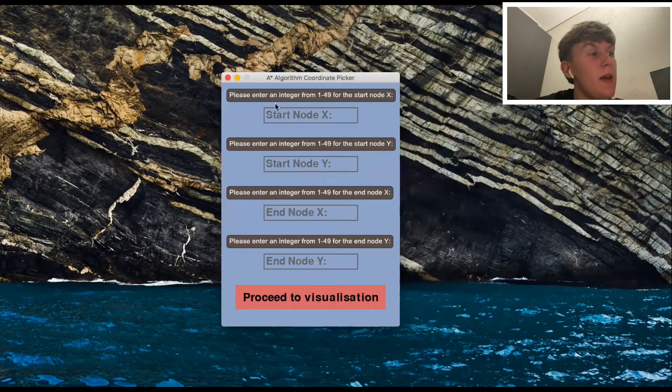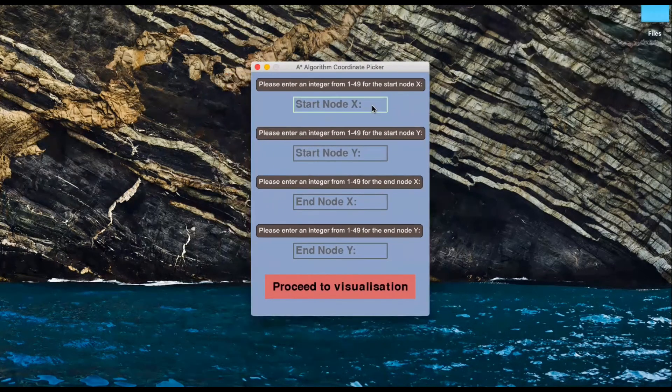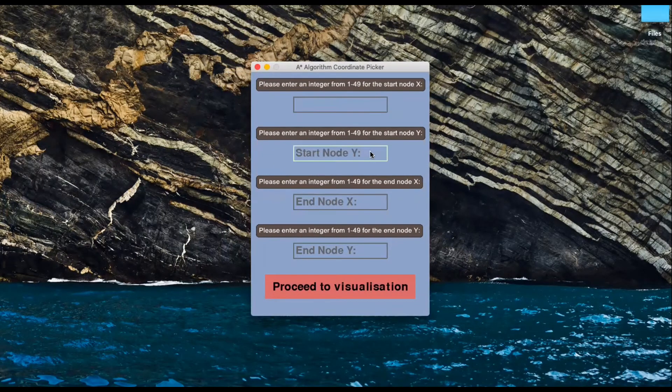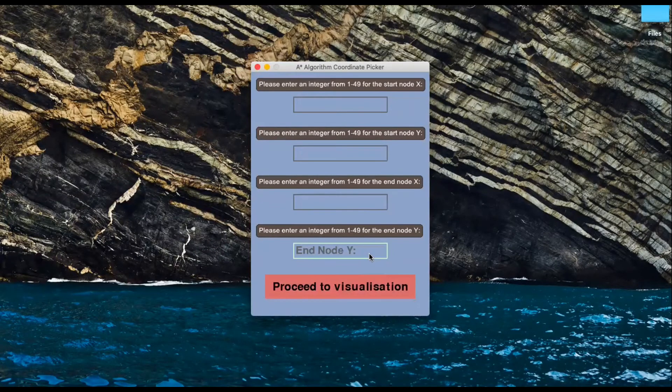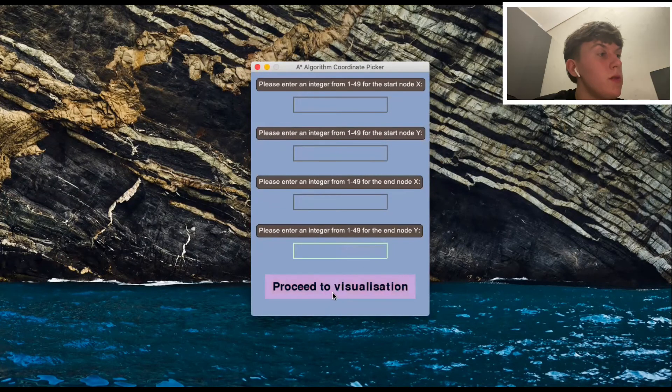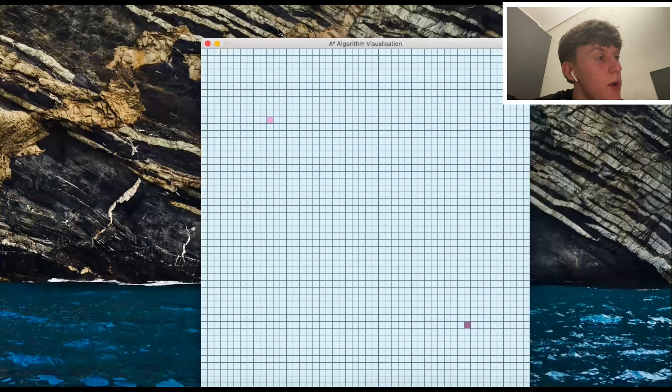For this example we'll use 10,10 and 40,40. So as you can see now they're displayed on our screen in pink and purple.